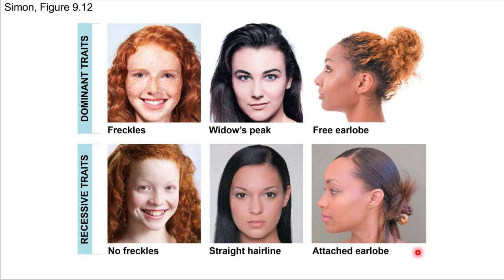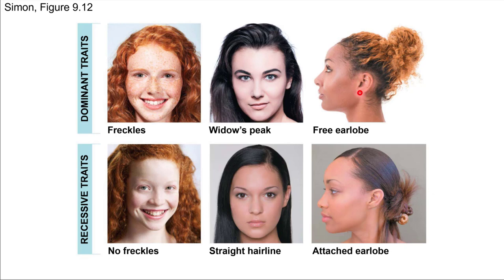Let's look at some common human traits — this is mostly just for fun since it's applied to people. For example, whether a person has freckles or no freckles: if a person has the allele for freckles, they will have freckles — this is a dominant trait, and having no freckles is recessive. Widow's peak is another example, referring to whether the hairline dips down into a v-shape in the front — having a widow's peak is dominant. Earlobes can be either free, meaning there's some curvature, or attached, where the attachment is straight onto the head with no curvature.